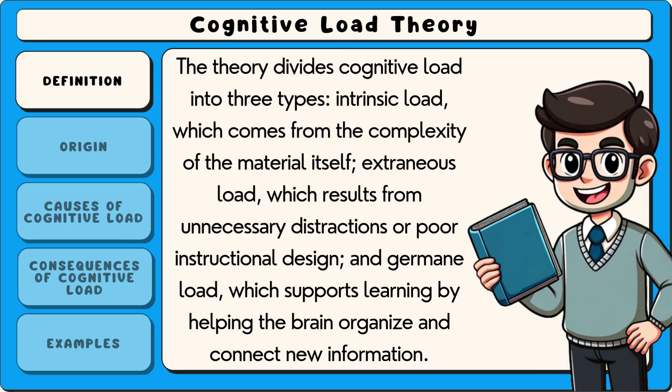The theory divides cognitive load into three types: intrinsic load, which comes from the complexity of the material itself; extraneous load, which results from unnecessary distractions or poor instructional design; and germane load, which supports learning by helping the brain organise and connect new information.